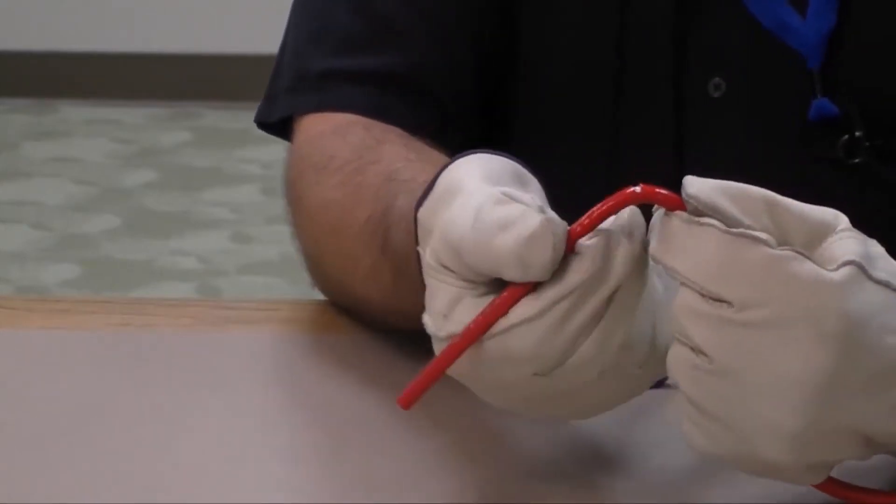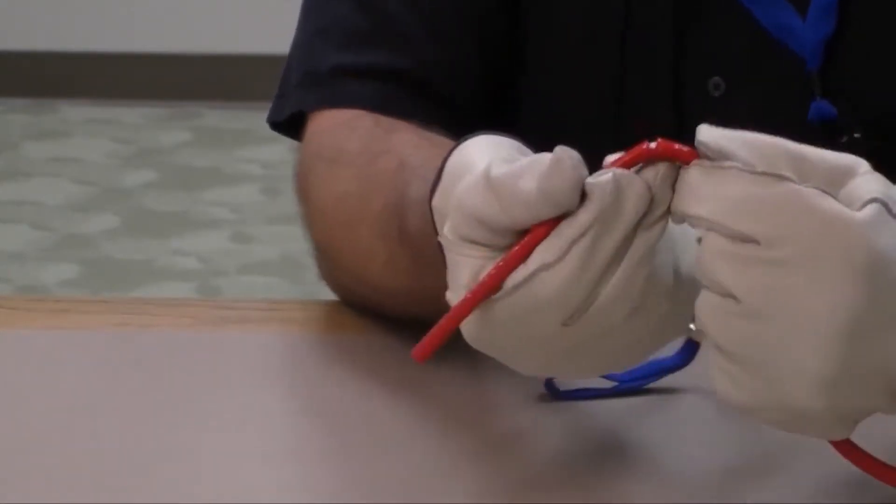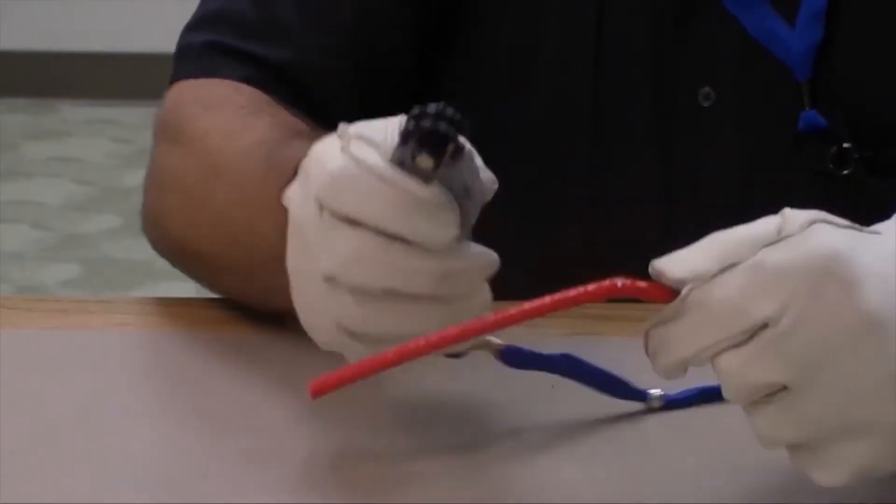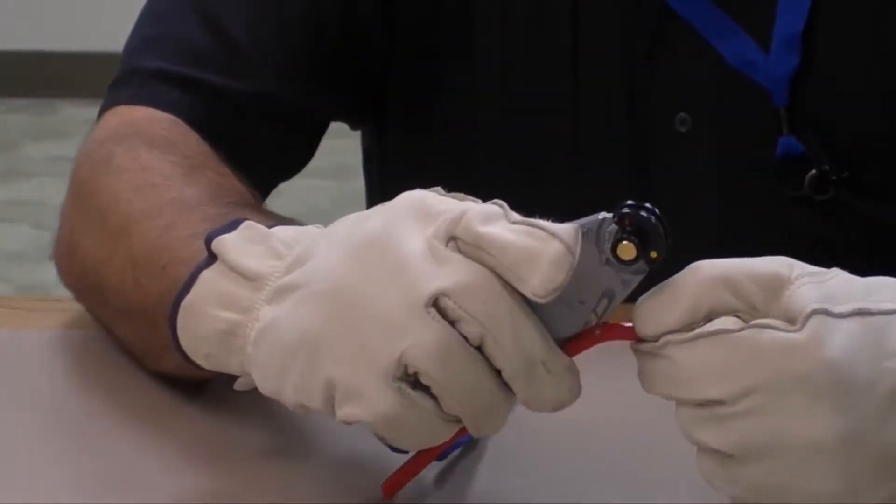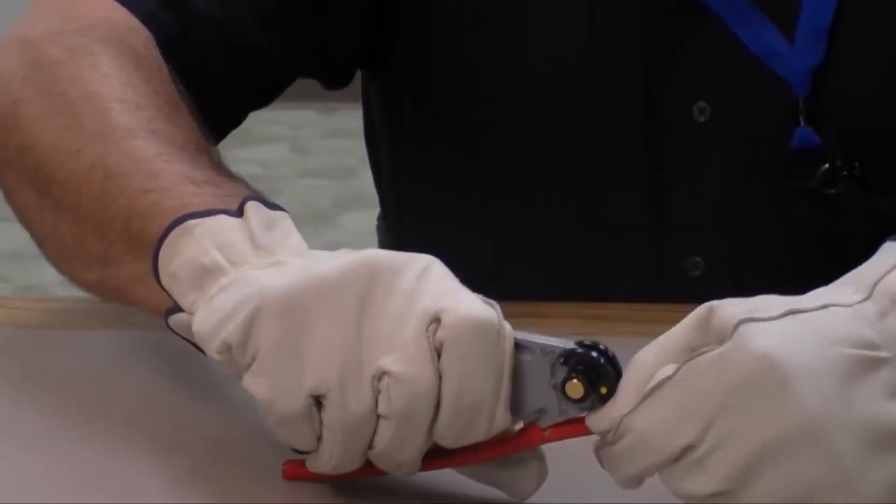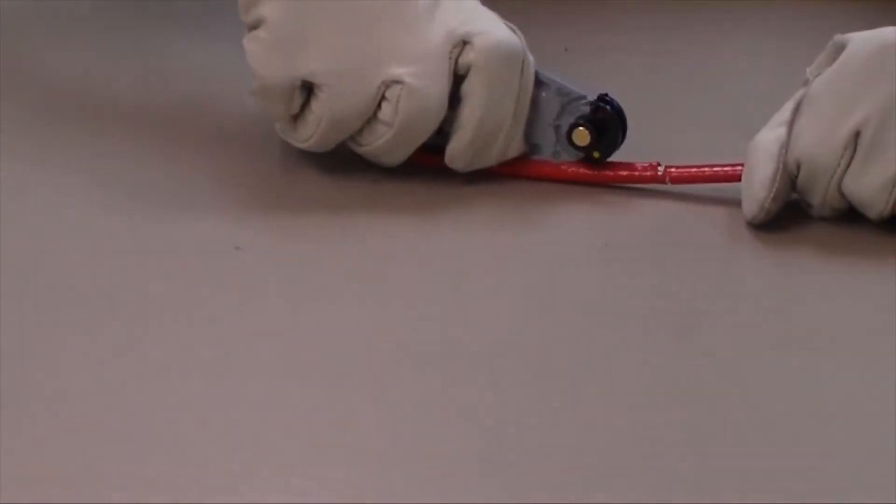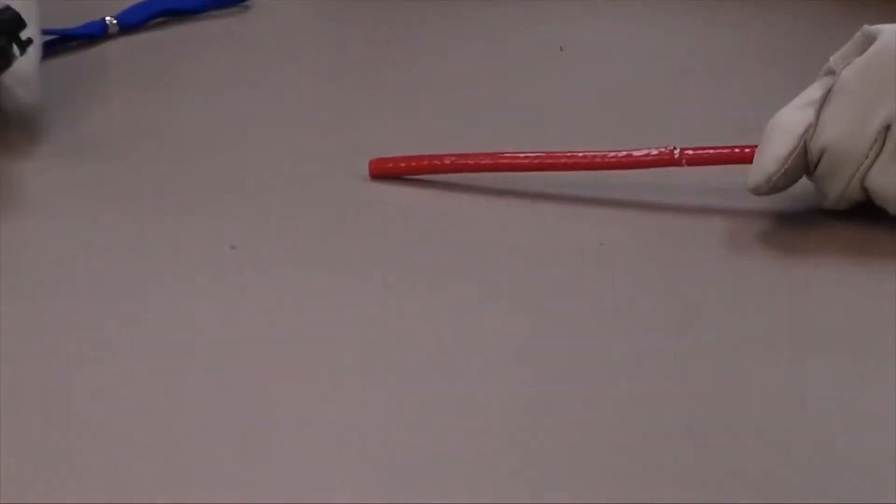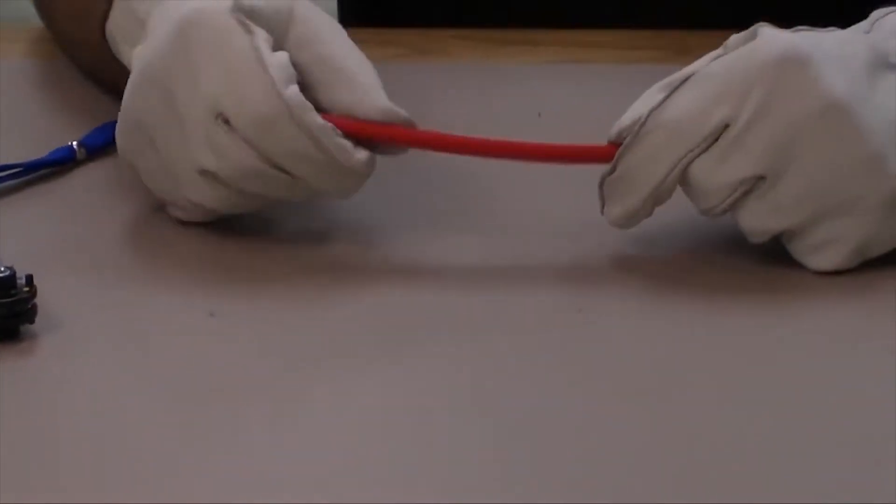Bend the heating cable at the score to separate the jacket. Insert the jacket's slitting tip under the cable jacket. Pull the stripping tool towards the end of the heating cable to slit the jacket.